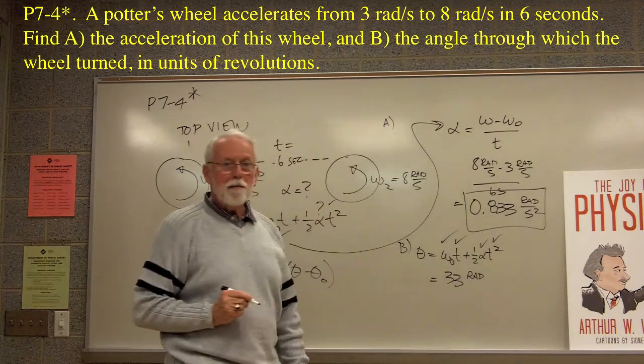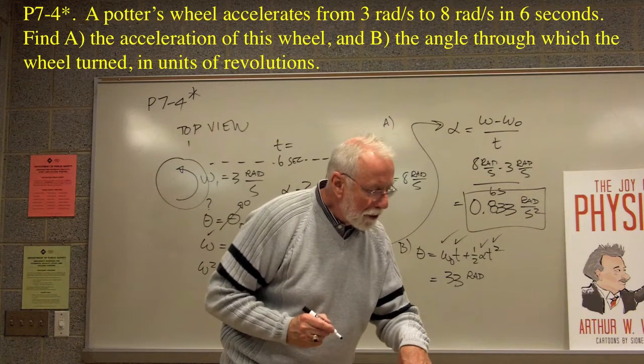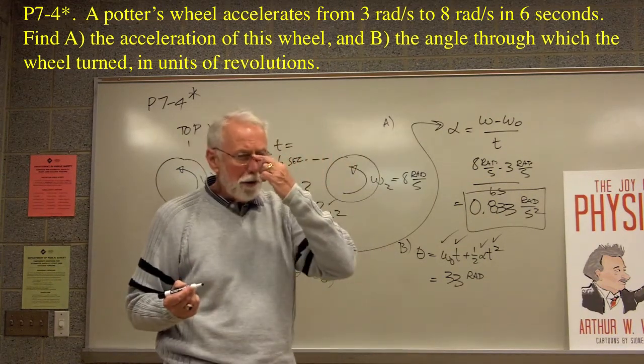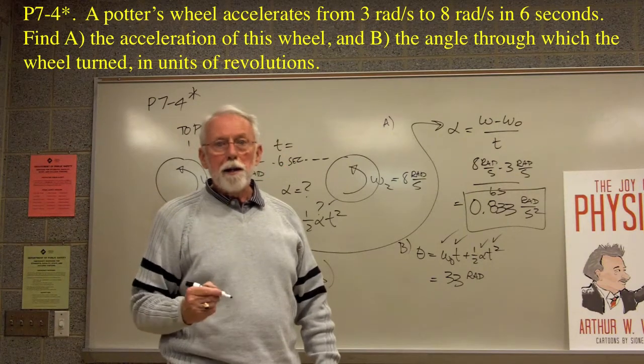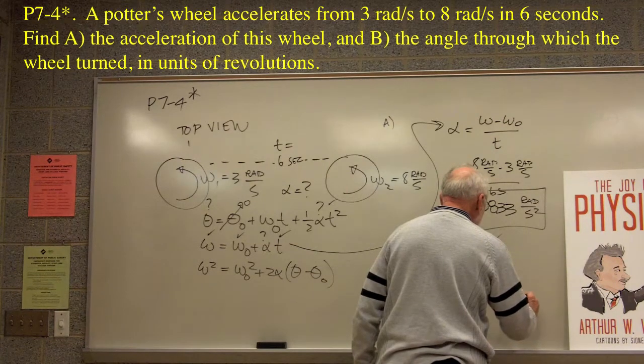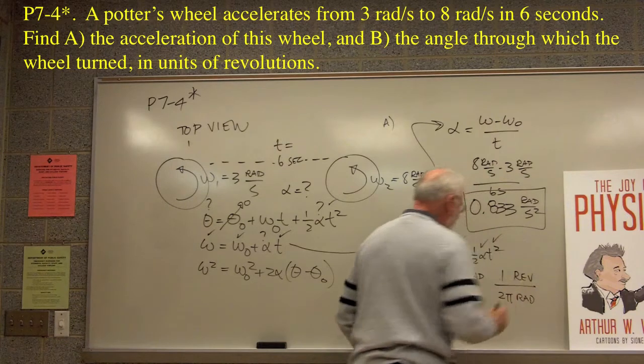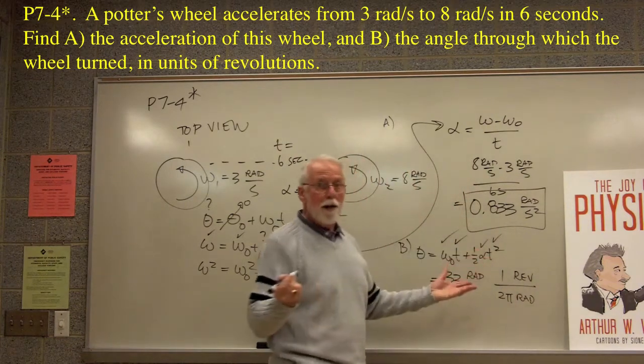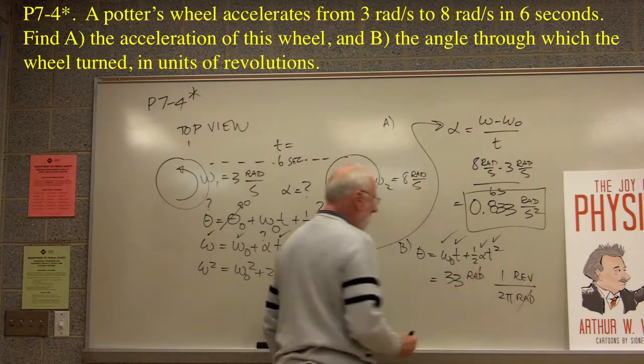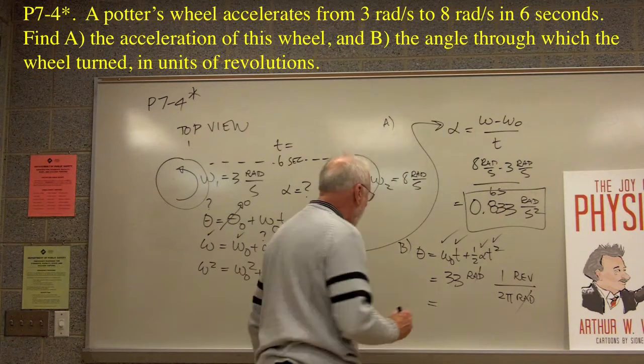So is that good? Is that the answer? No. The answer says, or the problem says, angle through which the wheel turns in units of revolutions, we're going to have revolutions. So how do we convert from radians to revolutions again? There are two pi radians in a revolution. So then we can say two pi radians are the same thing as one revolution. So if we make a fraction out of that, it's a one, isn't it? Two pi radians and one revolution, same thing. So then the radians will cancel and we'll wind up with revolutions.